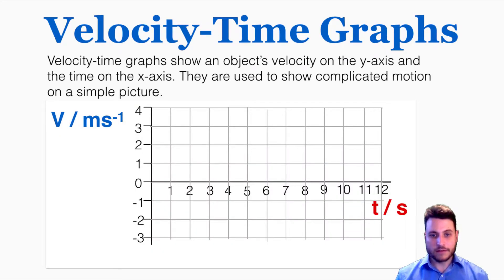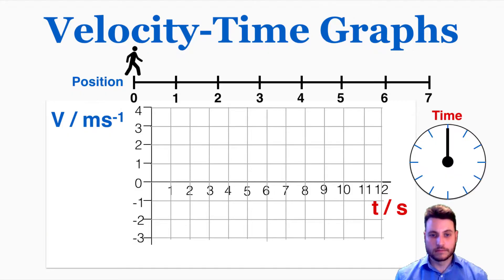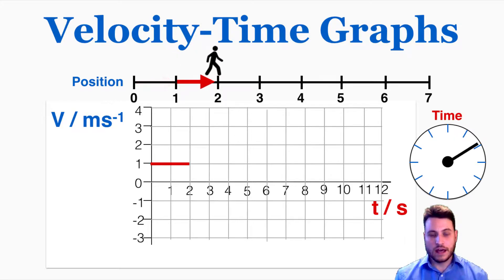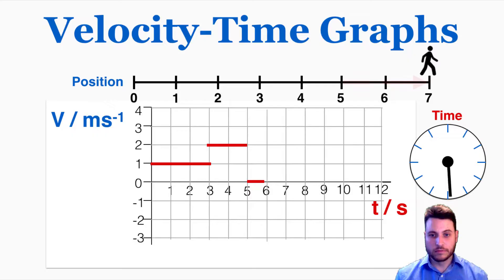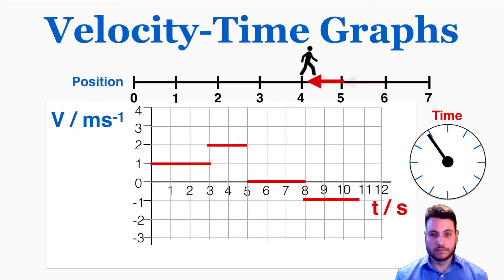Velocity-time graphs show an object's velocity on the y-axis and the time on the x-axis. They're used to show complicated motion on a simple picture. As an example, if this person were to start walking as the time moves, I can see that they have a velocity of 1, then a velocity of 2, then a velocity of 0, and then a velocity of negative 1 — that's how that would be represented on the graph.